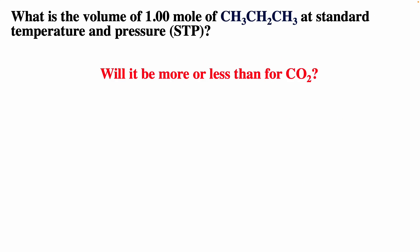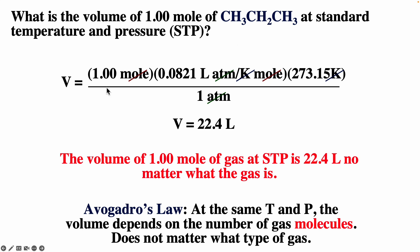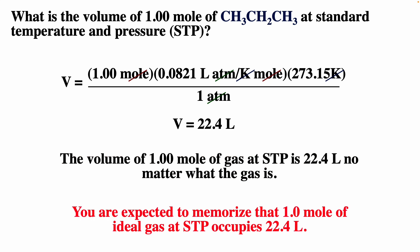If we asked the same question for a different gas, the result would be the same because the ideal gas law does not depend on the type of gas — only on the number of gas particles. So 1 mole of any ideal gas at STP gives you 22.4 liters, no matter what the gas is. Remember that: 1 mole of ideal gas at STP occupies 22.4 liters.